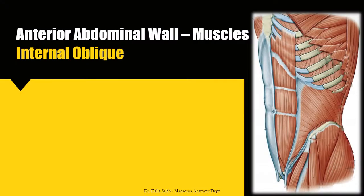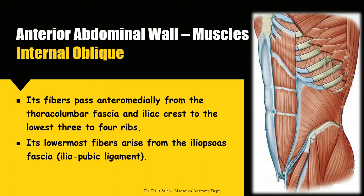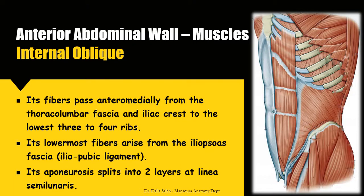Deep to the external oblique lies the internal oblique muscle. Its fibers pass anteromedially from the thoracolumbar fascia and from the iliac crest. Its lowermost fibers arise from the iliopubic ligament, which is derived from the iliopubic fascia lying deep to the inguinal ligament. The aponeurosis of the internal oblique splits at the level of the linea semilunaris into two layers to form the anterior and the posterior walls of the rectus sheath.